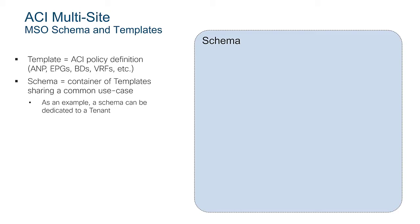The objects remain the same that you should be familiar with in ACI — it's just how you organize them in a hierarchical way on the Multisite Orchestrator. The schema is a container of templates, just like a drawer where you put all your templates. The template is really the construct that contains the specific policies: Application Network Profiles, EPGs, VRFs, Bridge Domains, and Contracts. An important point: before creating configuration inside a template, you need to associate the template to a tenant — there is always a one-to-one association between template and tenant.